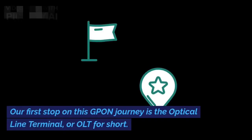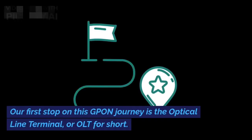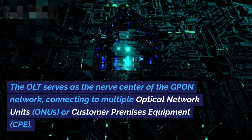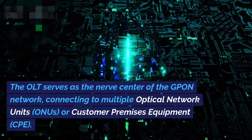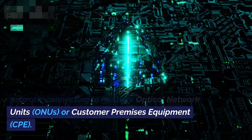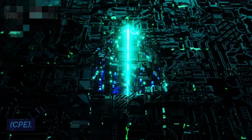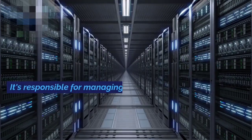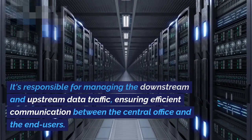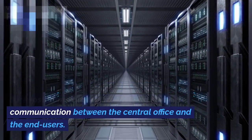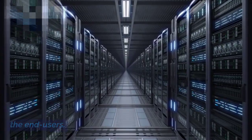Our first stop on this GPON journey is the Optical Line Terminal, or OLT for short. The OLT serves as the nerve center of the GPON network, connecting to multiple Optical Network Units (ONUs) or Customer Premises Equipment (CPE). It's responsible for managing the downstream and upstream data traffic, ensuring efficient communication between the central office and the end users.